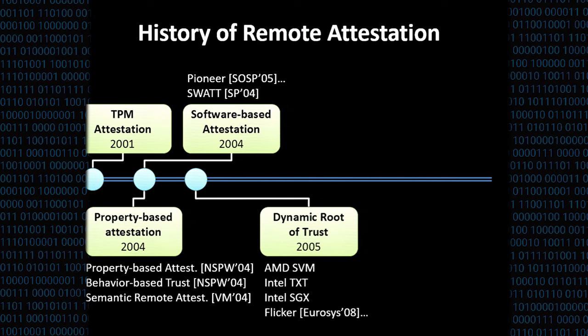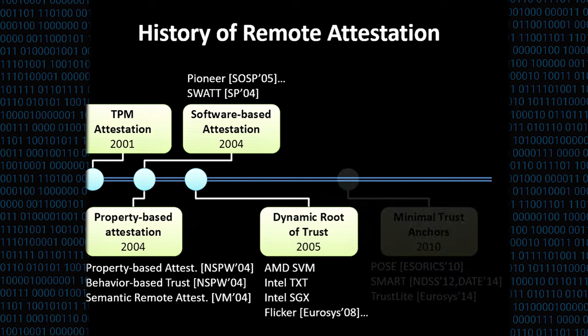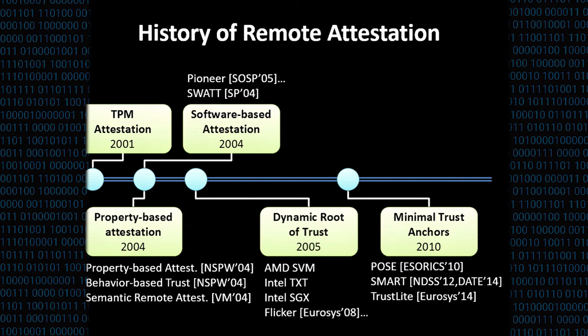In 2005, dynamic root of trust was introduced, which allows a kind of late launch, so an application module can be dynamically loaded into a trusted execution environment, and prominent examples in this field are Intel TXT or, recently, Intel SGX. Since TPMs are not likely to be deployed on embedded systems due to cost reasons, several researchers focused on introducing minimal trust anchors. Here, prominent examples are SMART or TrustLite.